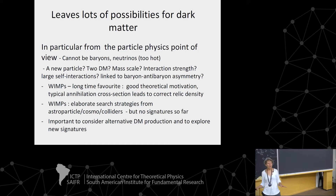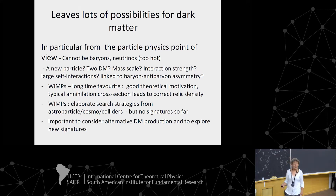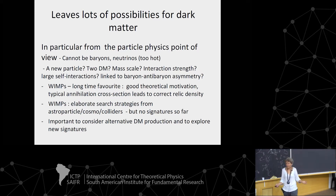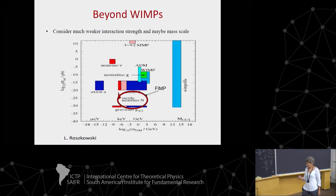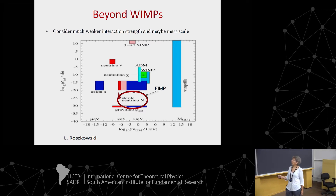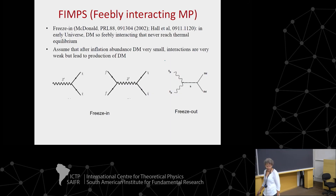The point of view I will take now is to explore other possibilities — not really concentrating on a specific model — and to see how we can exploit the experimental instruments at hand to test these other kinds of dark matter. There are many possibilities for the interaction strength and mass range for dark matter. Typically WIMPs live in one region, but what I want to concentrate on is the region where couplings are much weaker.